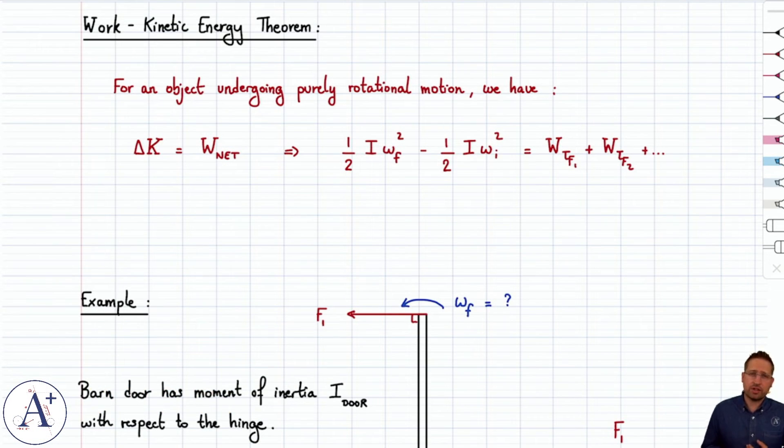Our version of the work-kinetic energy theorem is only valid for linear motion so far. If you remember when we computed delta K and set it equal to work net, K was the linear kinetic energy, one-half mv squared, and work net was the sum of the different works done by the different forces.